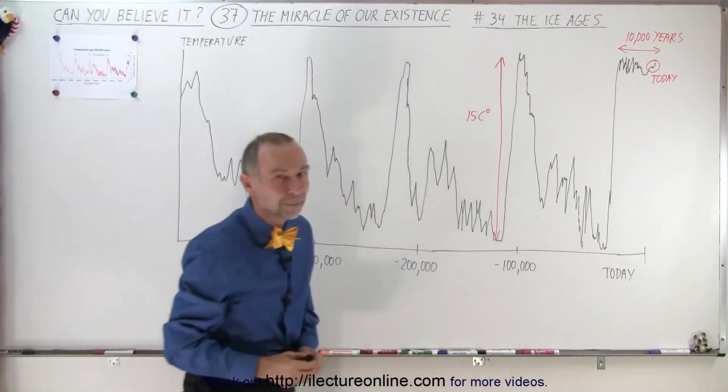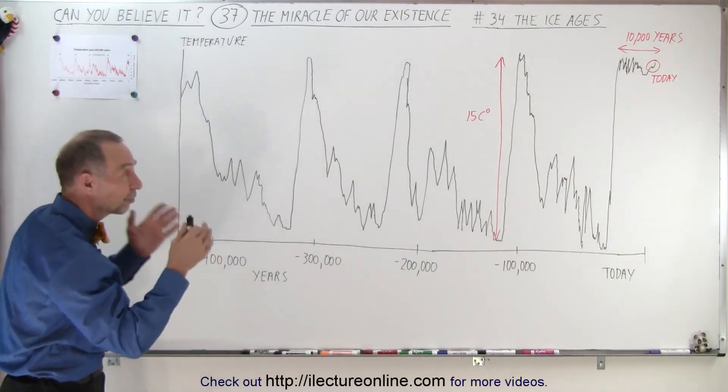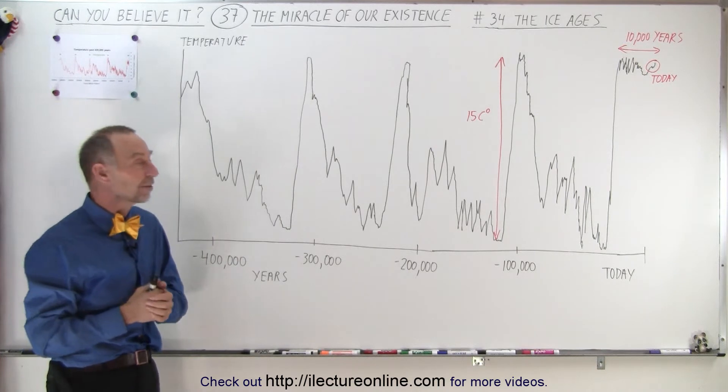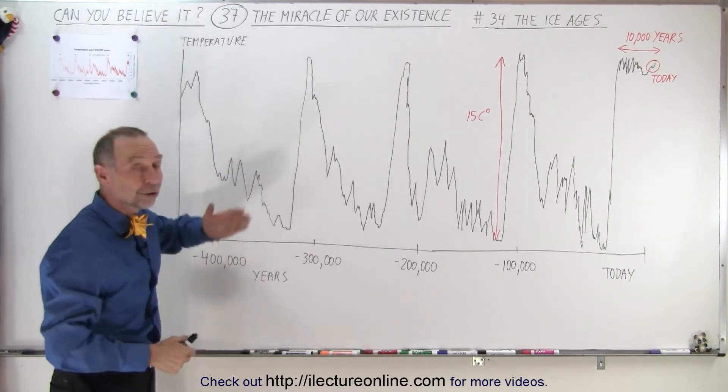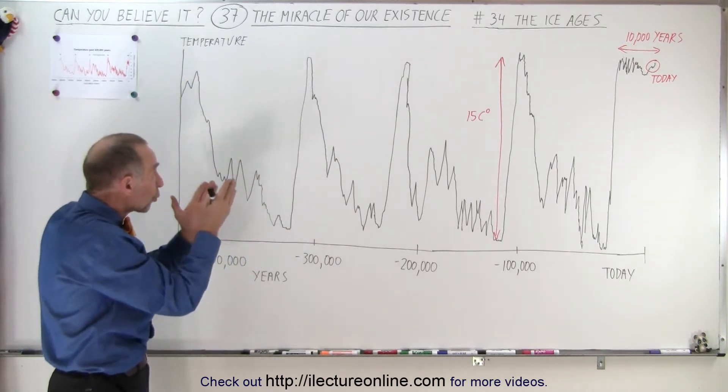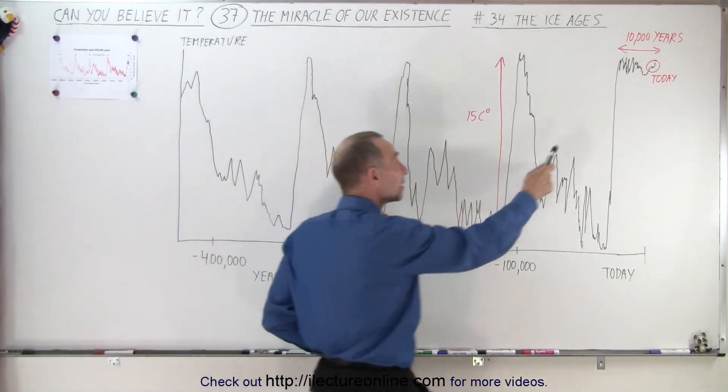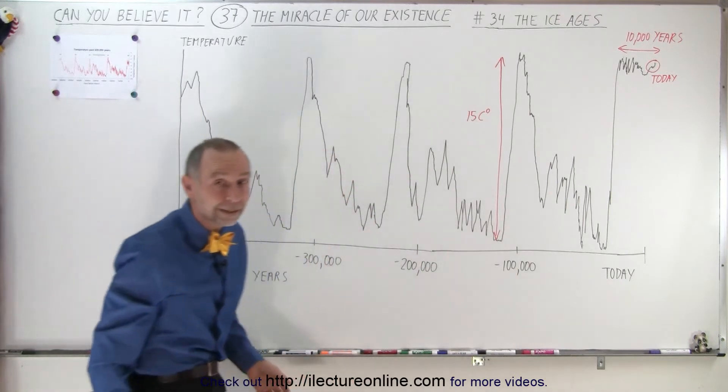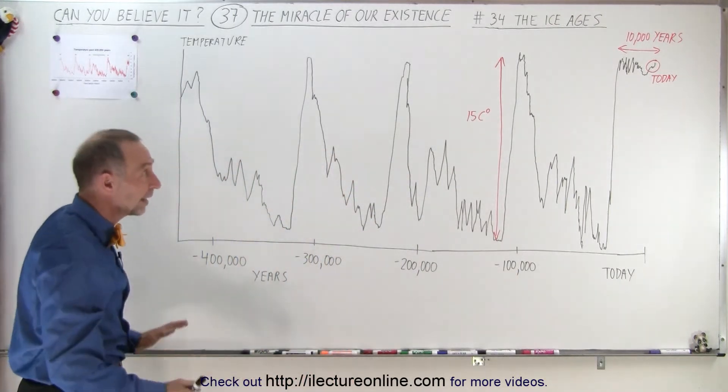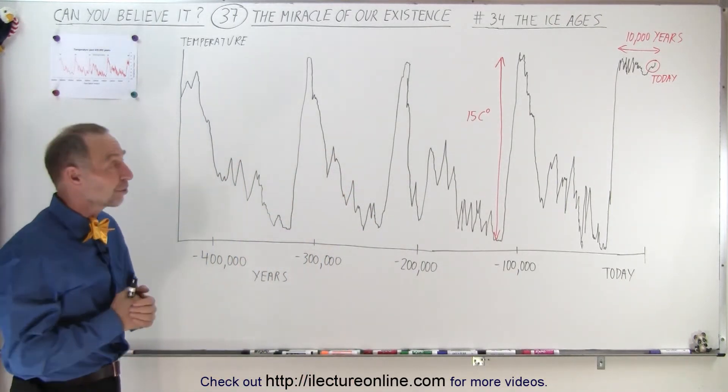But as you can see from the past, this probably is not going to last. These periods of warmth called interglacials are relatively short in duration, about five to 10,000 years, and we're now in about year 11,000 of our current warm period. And if history holds, it is not going to be that way for much longer.